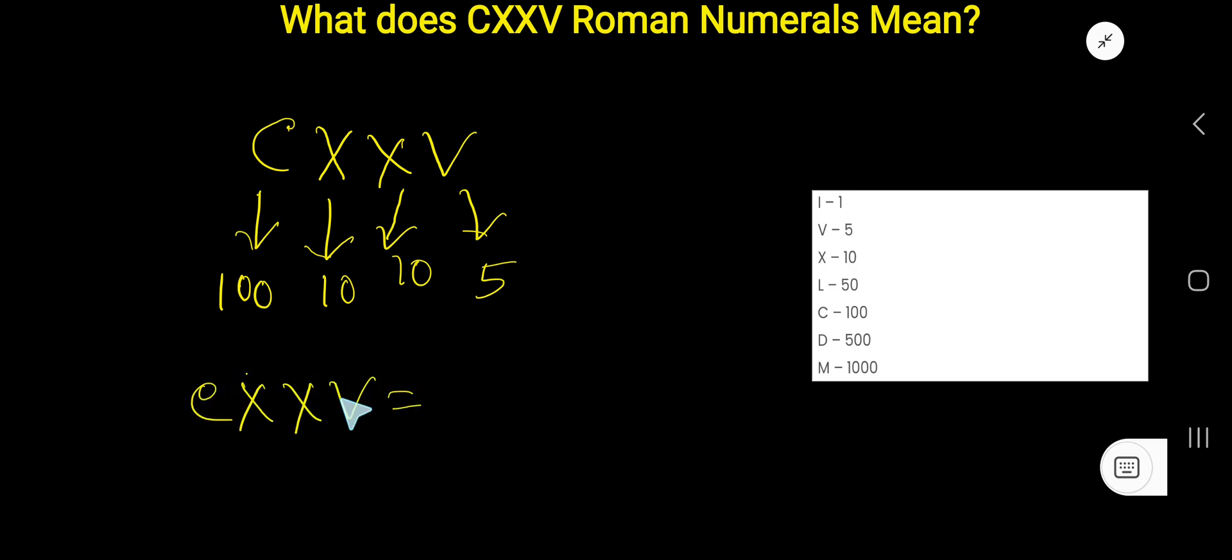In CXXV, C means 100. After 100 we are getting lower valued symbols X and X, so you have to add these symbols. The rule is that if you get lower valued symbols after higher valued symbols, then you have to add. So you add 10 plus 10. Since XX is less than 100 and is placed after the greater valued symbol C, we add these values.